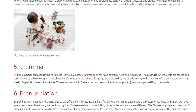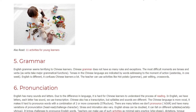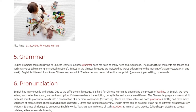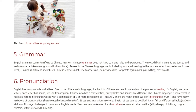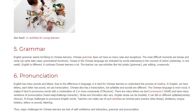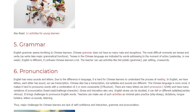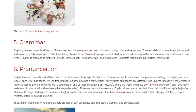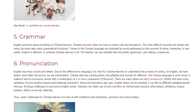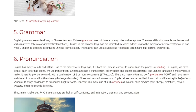Challenge 6: Pronunciation. English has many sounds and letters, and due to the differences between the languages, it is hard for Chinese learners to understand the process of reading. In English, letters each have sounds and we use transcription. Chinese also has transcription, but syllables and sounds are different. The Chinese language is more vocal, making it hard to pronounce words with a combination of two or more consonants. There are also many letters we don't pronounce, and many variations of pronunciation.